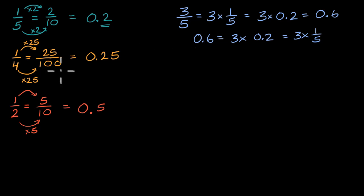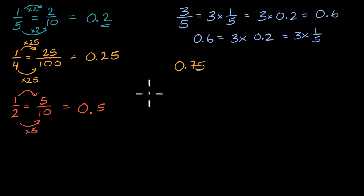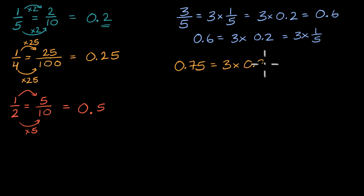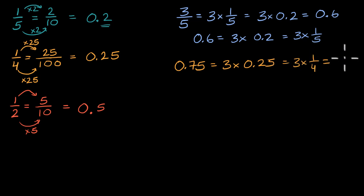Let's do another one. Represent 0.75 as a fraction — pause the video and try it yourself. You might immediately recognize that 75 is 3 times 25. So 75 hundredths equals 3 times 25 hundredths. And 25 hundredths we already know is 1/4. So this equals 3 times 1/4, which is 3/4. Over time you'll just recognize immediately that 75 hundredths is 3/4, because 25 hundredths is 1/4.